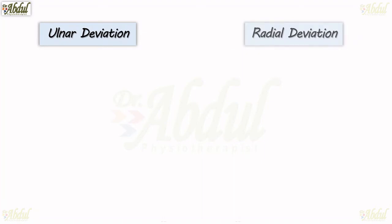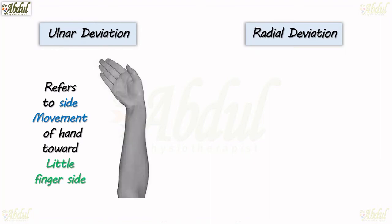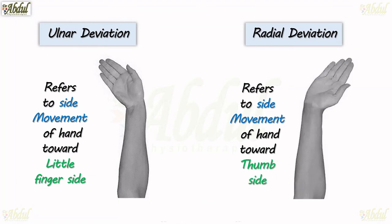Ulnar deviation and its antagonistic movement is radial deviation. Ulnar deviation refers to the side movement of the hand toward the little finger side, something like this. Radial deviation refers to the side movement of the hand toward the thumb. Ulnar deviation and radial deviation.